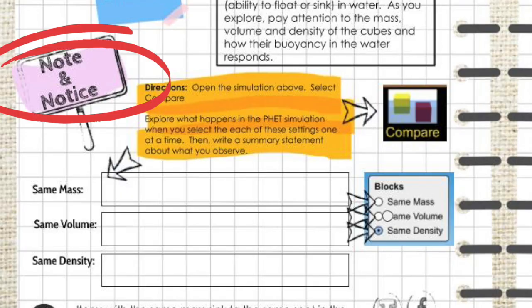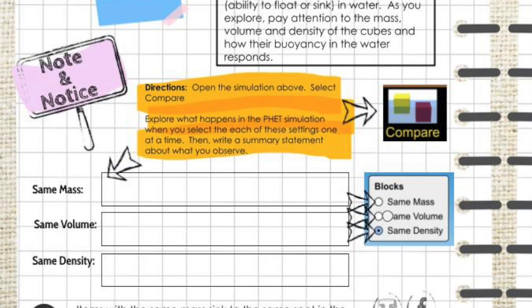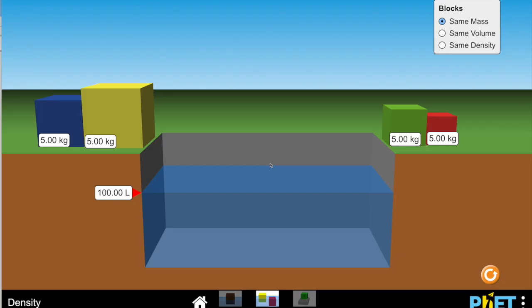The note and notice portion on this page is showing us that we're going to use three different sections of this simulation. First, let's take a look at the same mass section. To get there, you're going to go ahead and click the words same mass.